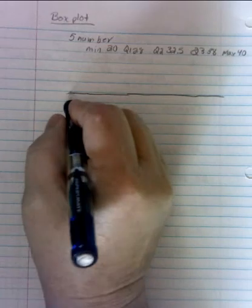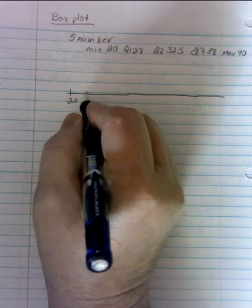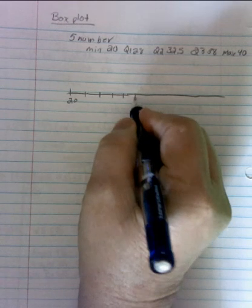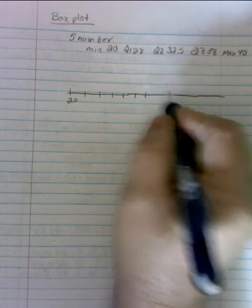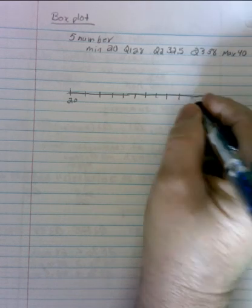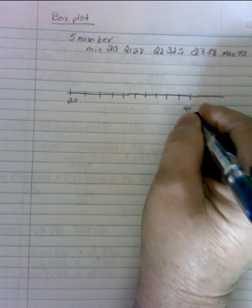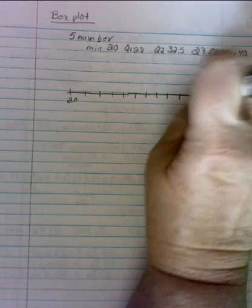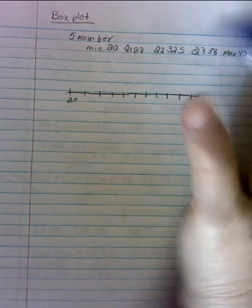I'm going to start at 20 and go 2, 4, 6, 8, 10, 12, 14, 16, 18, 20. And as usual I've drawn my line too long and so I'm just going to erase this part off. Sometimes you might need it longer or whatever.